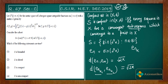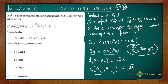Take any subsequence of eₙ. The distance between any two terms of that subsequence is also √(2π), which means the subsequence is not Cauchy. Because it is not Cauchy, it cannot be convergent. Therefore every subsequence of eₙ is non-convergent. This gives us a sequence in S with no convergent subsequence, so S is not compact according to the definition.